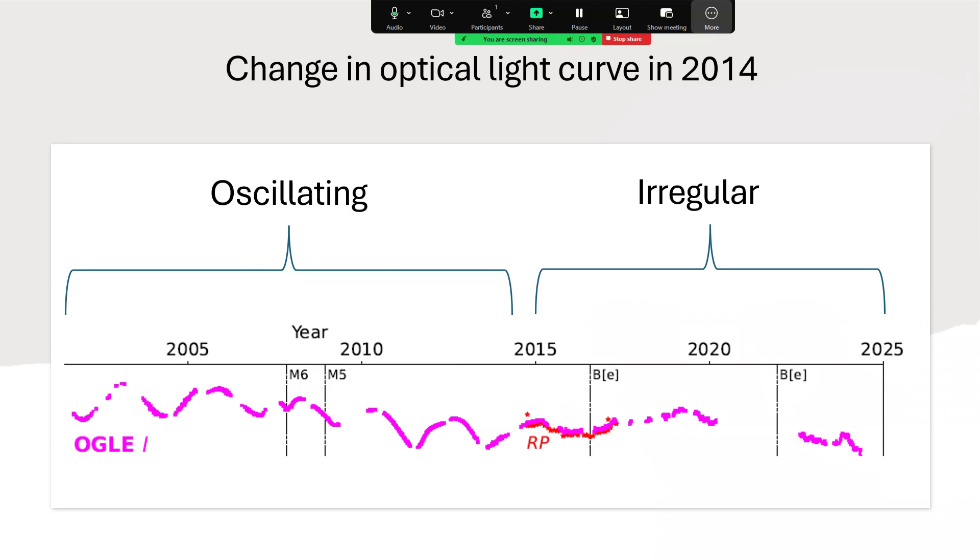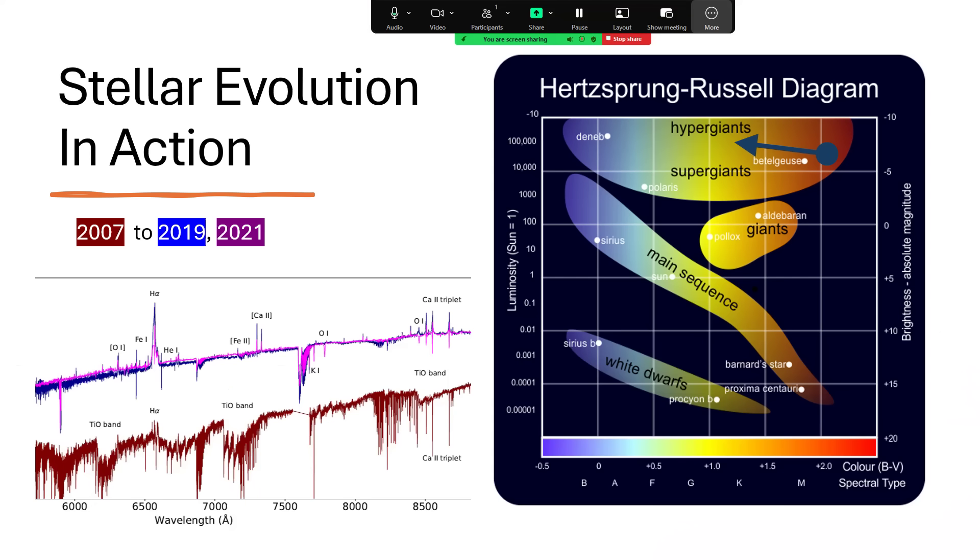And up until around about 2014, it was oscillating in a fairly regular pattern, something that we see a regular pulsation in brightness of these red supergiant stars. And then that went away and was replaced by a rather more erratic and irregular pattern that you can see in the right hand part of the graph there. Not only did the brightness change, but the spectrum changed as well. And we can see that in the brown trace at the bottom, the spectrum of the light from 2007. And then after the transition in 2014, we're looking at the top two traces, 2019 in blue, 2021 in purple, which are both fairly similar. And the spectrum has just changed completely.